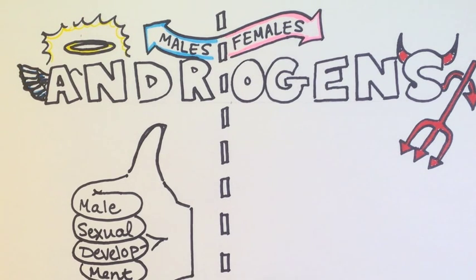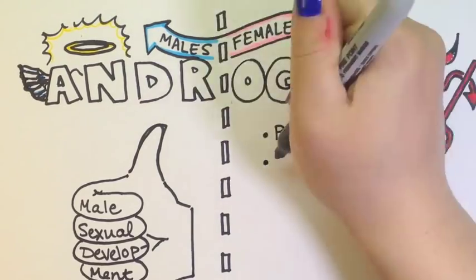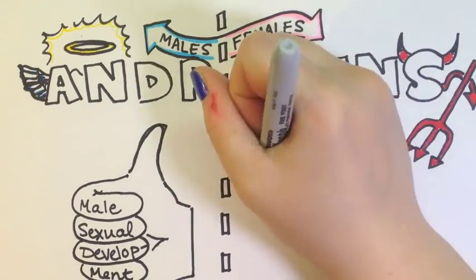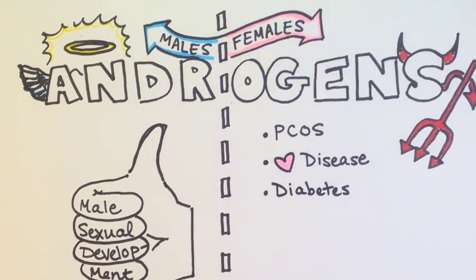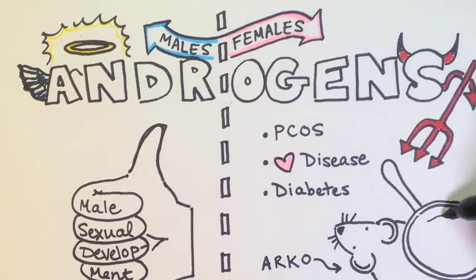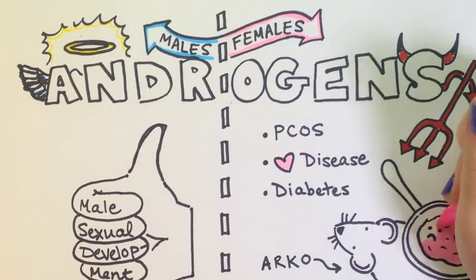Regardless of PCOS, excessive androgens in women is also associated with diabetes and heart disease. However, in global androgen receptor knockout mice, the females had decreased fertility, defective follicular development, and premature ovarian failure. And this led to the idea that androgen signaling is essential for female reproductive health.